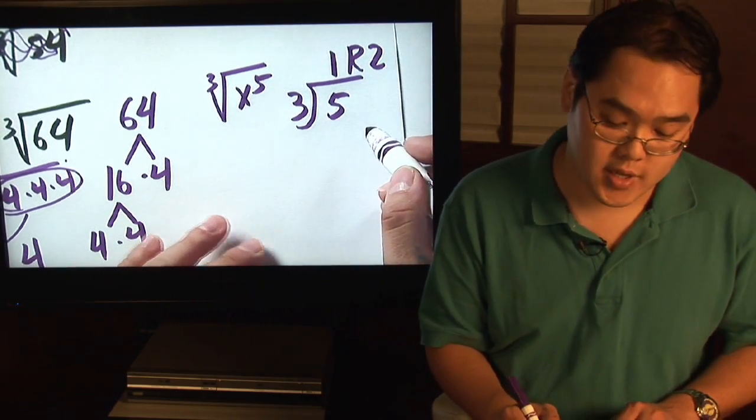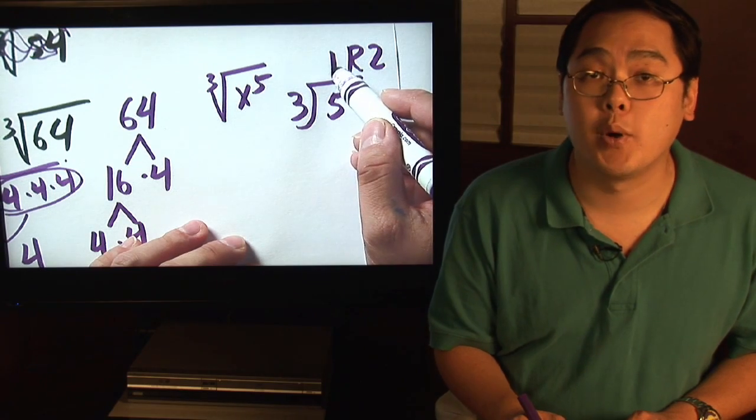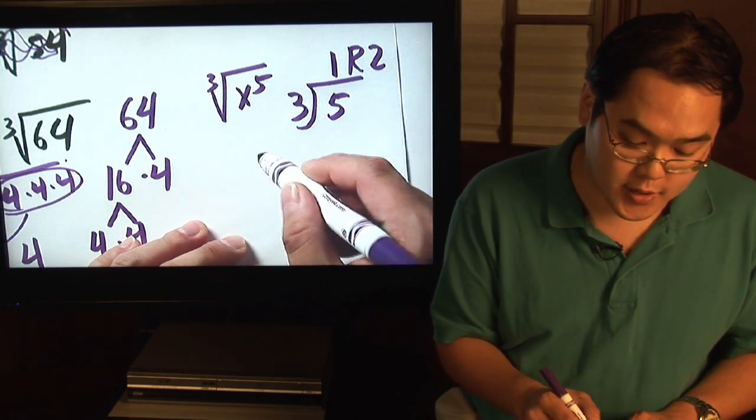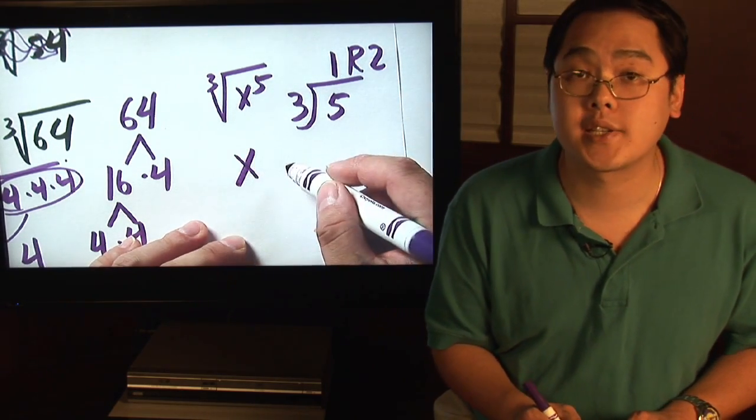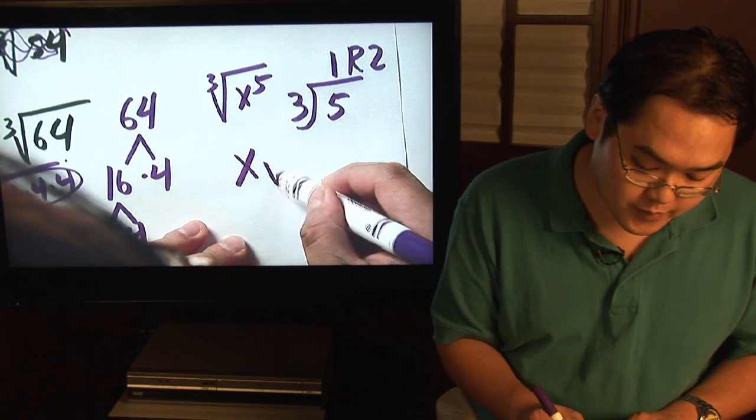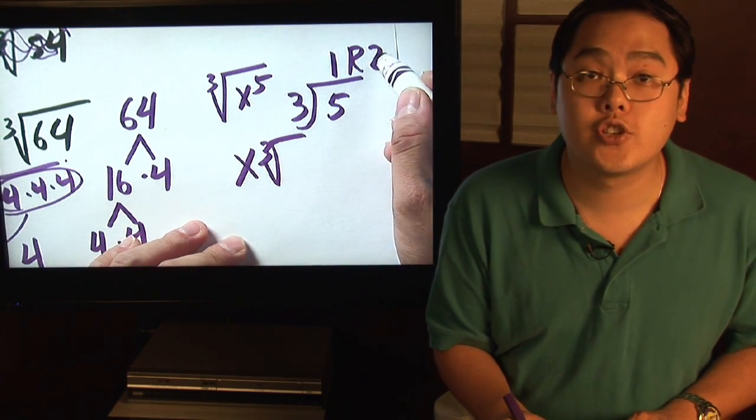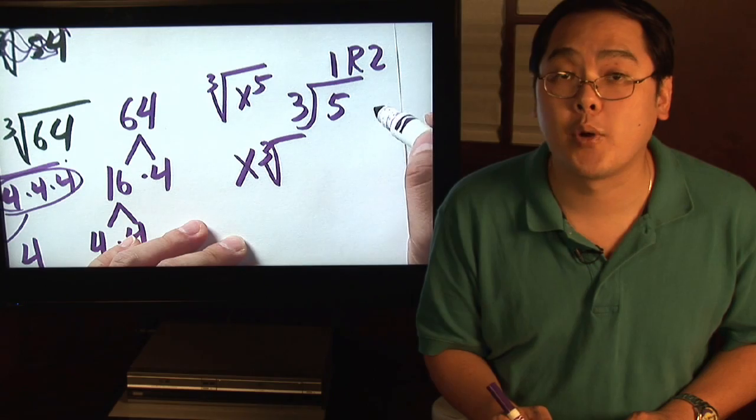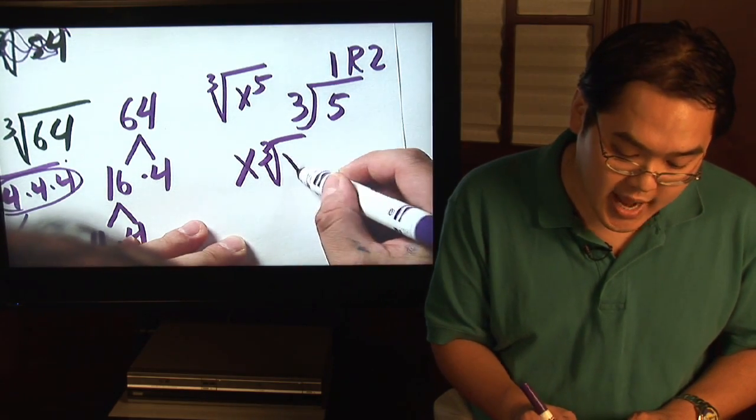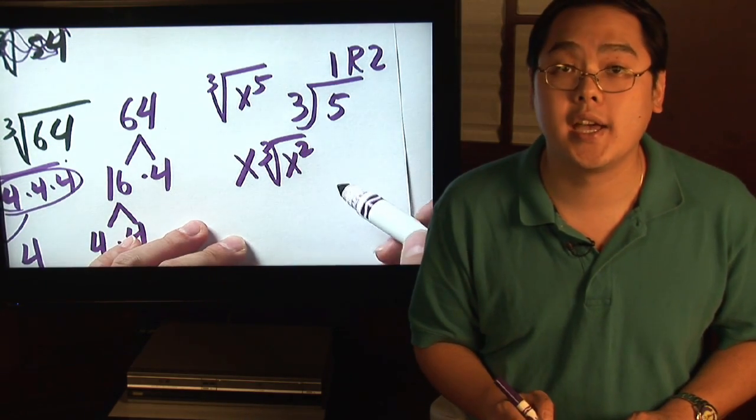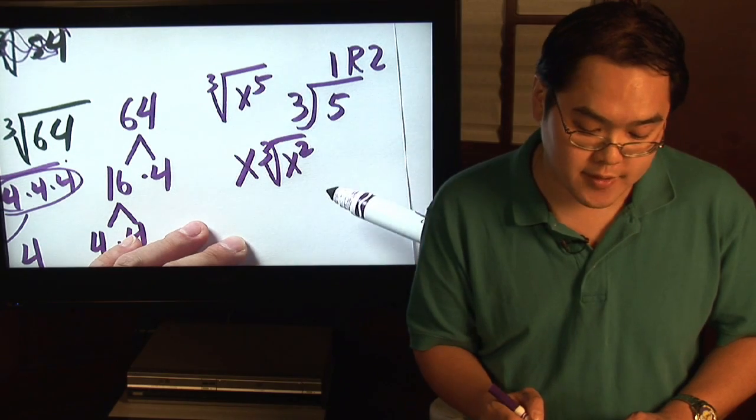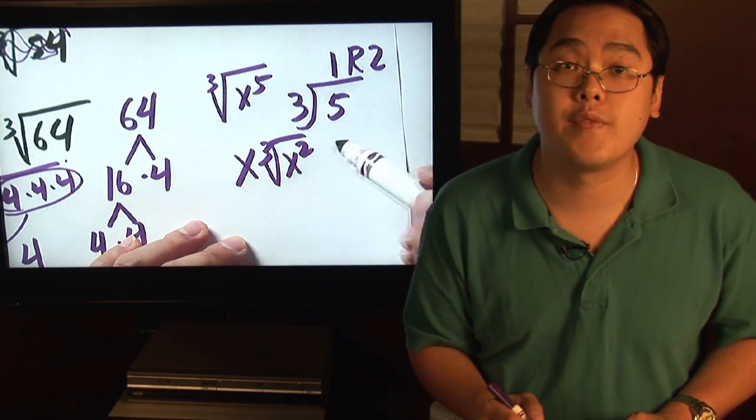Why is that important? The 1 is the exponent of x that gets to go out. In other words, x to the first, or x, goes outside the radical. The remainder 2 tells you the exponent that stays in, so that means x squared stays on the inside. In other words, the cube root of x to the fifth is x cube root of x squared.